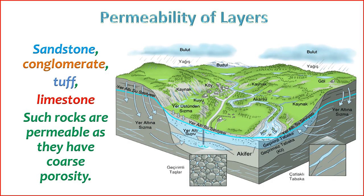9. Permeability of rock layers refers to the ability of rocks to transmit fluids, such as water or oil. It is a crucial property in hydrogeology and petroleum engineering, influencing the movement of fluids through subsurface formations. Permeability is influenced by various factors, including the type of rock, its porosity, and the presence of fractures or faults. Porous rocks with interconnected pore spaces, such as sandstone or limestone, often have higher permeability compared to denser rocks like shale or clay.